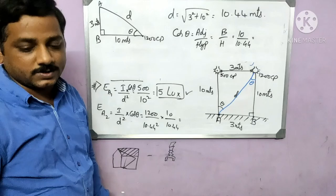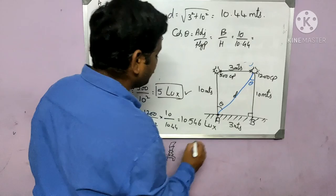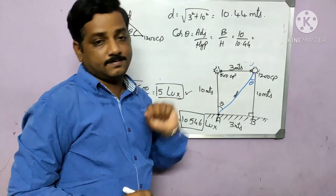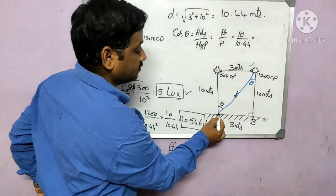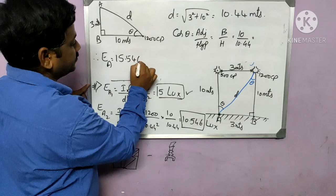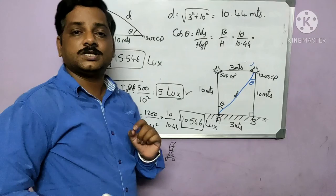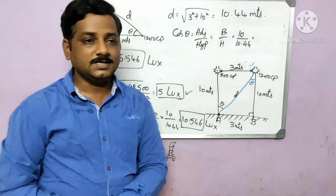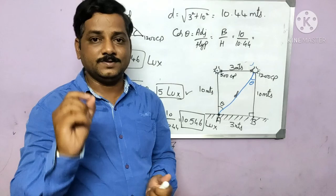The total illumination at point A is EA1 + EA2 = 5 + 10.546 = 15.546 lux. To summarize: the formula for illumination is E = I / d² × cos θ, where I is luminous intensity (candle power), d is the distance from the source to the point, and θ is the angle of incidence. If the light falls straight down, θ = 0 and cos θ = 1, so E = I / d².